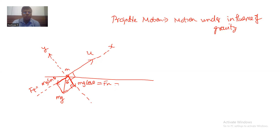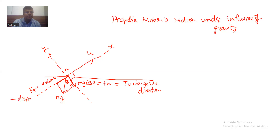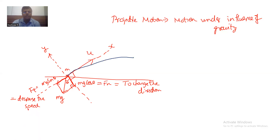The role of this normal force will be to change the direction. The role of this tangential force, because it is anti-parallel, will be to decrease the speed. That means projectile motion under the influence of gravity is a motion in a plane where the direction will also change and the speed will also keep changing.